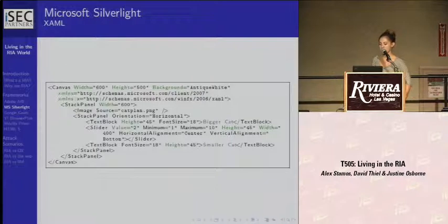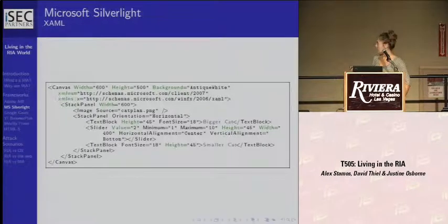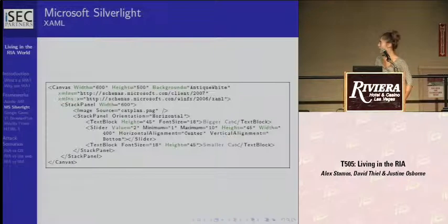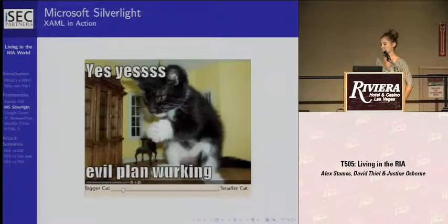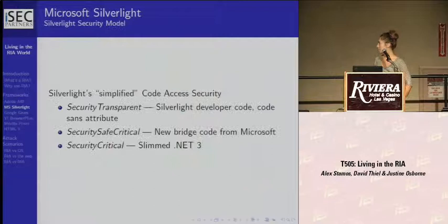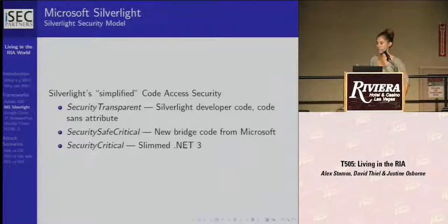Silverlight 2 introduces the core CLR, a slimmed-down version of the .NET CLR for dynamic content. Here's an example of some XAML markup. It's a language similar to HTML — you can create little widgets like a slider. It's very simple and intuitive for designers to pick up. This is what that markup renders in Silverlight. Silverlight's security model is based on the .NET CLR security model: code access security.